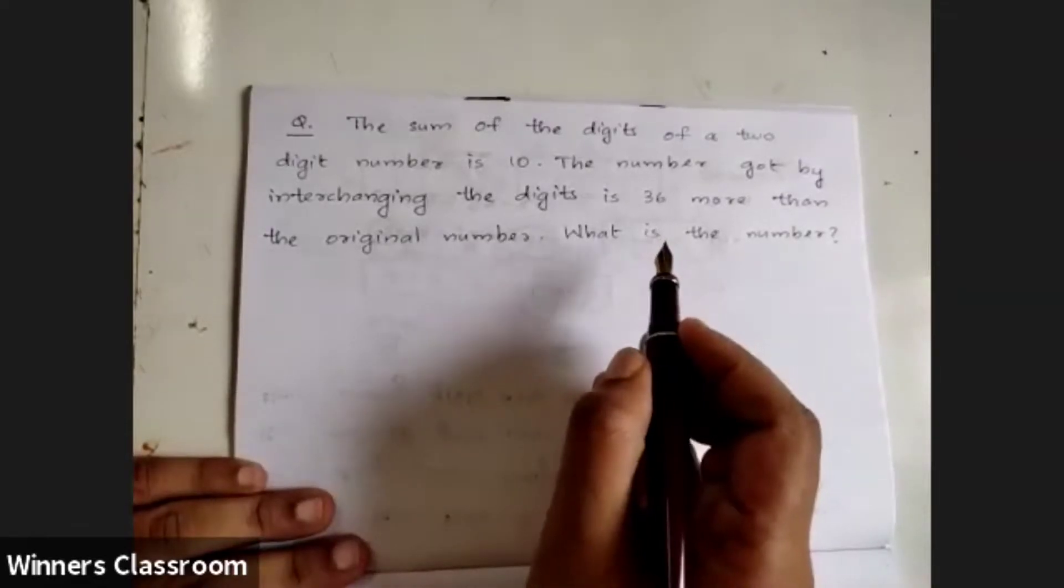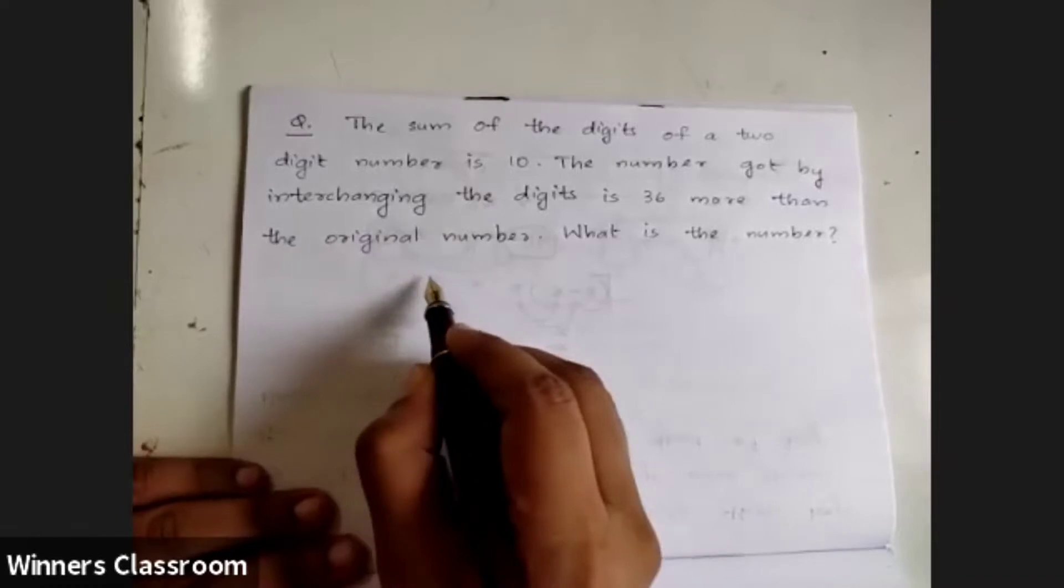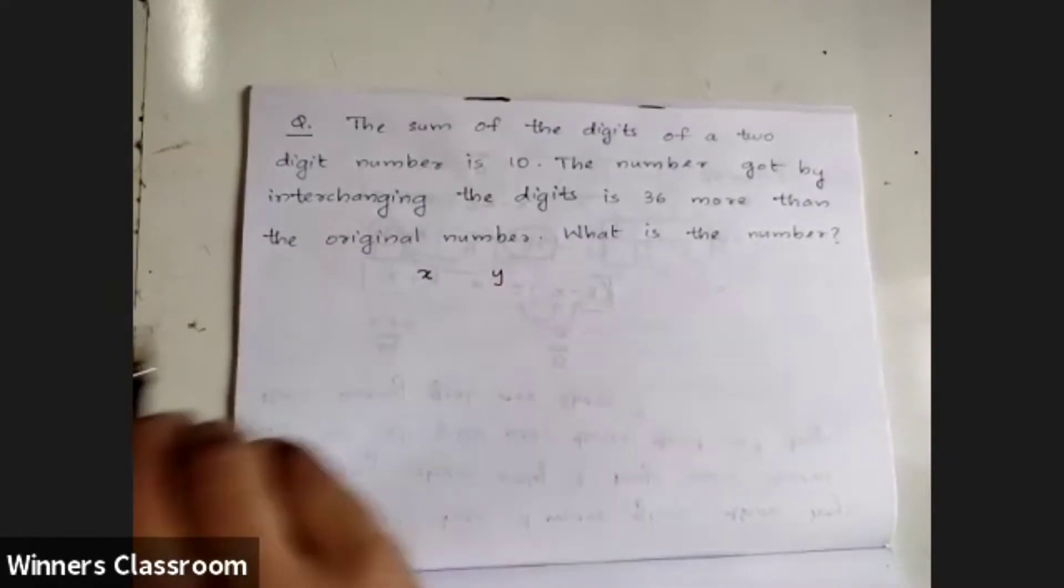The sum of the digits of a two-digit number is 10.